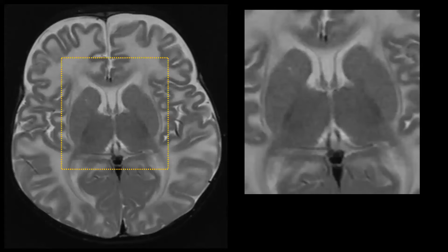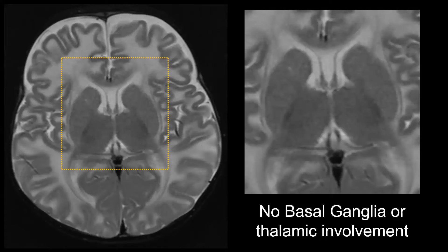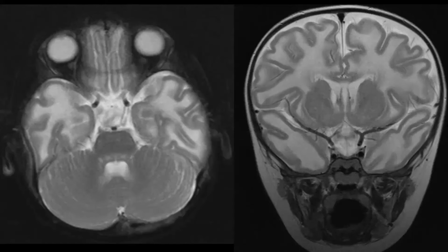Looking at the basal ganglia in van der Knaap disease: there is no basal ganglia involvement whatsoever — normal signal in the basal ganglia and the thalamus. Infratentorially, the brainstem and cerebellum look essentially normal in this patient, with perhaps slightly increased signal due to lack of myelination.